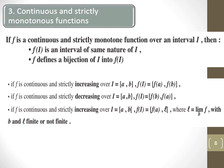If f is continuous and strictly monotone over an interval, it has an image, and f defines a bijection of i into f of i. If f is continuous and strictly increasing over a closed interval [a, b], the image is [f(a), f(b)]. If it's strictly decreasing over [a, b], we switch them to get [f(b), f(a)]. If the interval is open — for example (a, b) — and f is strictly increasing, the image is from f(a) to l, where l is the limit of f as x tends to b.